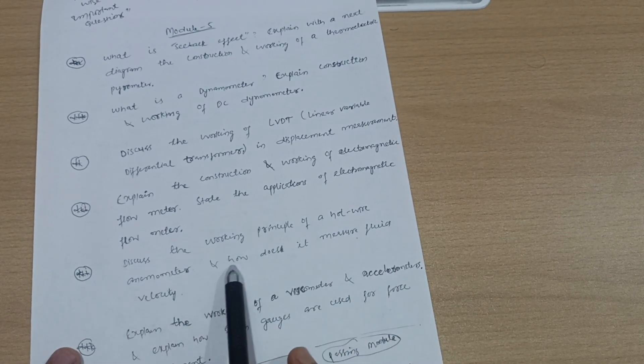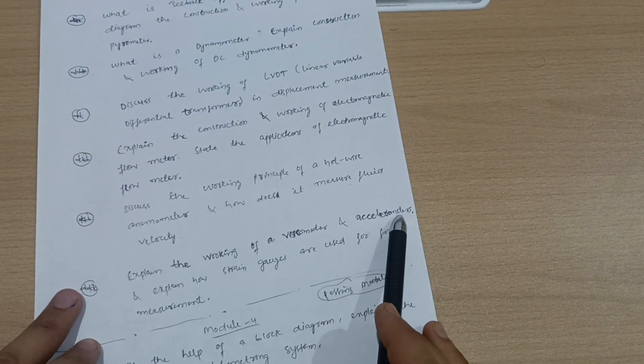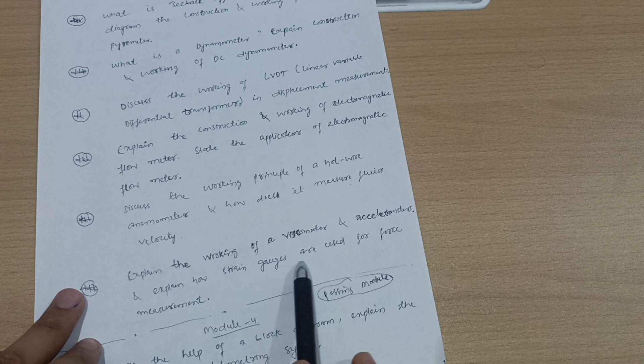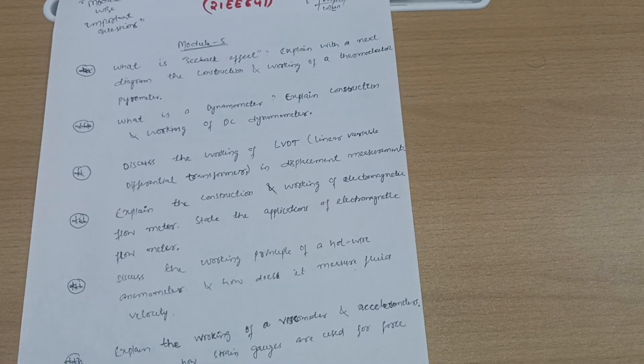Explain the working of viscometer and accelerometer, and explain how strain gauges are used for force measurement. This is all about Module 5. Now let's come to Module 3 which we are pending with.